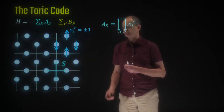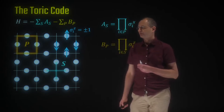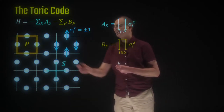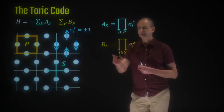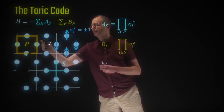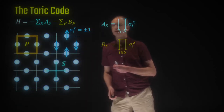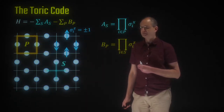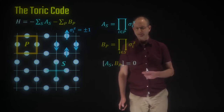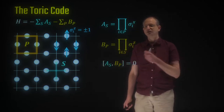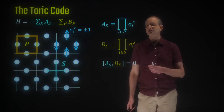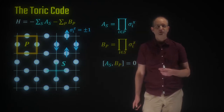Similarly, the B_p operator lives on plaquettes or squares, and it's defined as the product of the four sigma_z operators of the four spins that live on the edges of this plaquette. The nice thing about the Toric code model is that all these terms — all the A_s's and B_p's — commute with each other, so all the terms in the Hamiltonian commute.